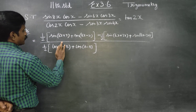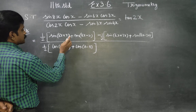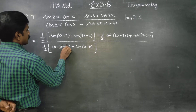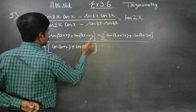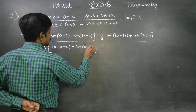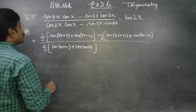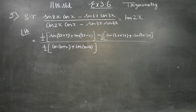Now substituting on your own: a plus b equals 2x and a minus b equals x. So 2x minus x gives us the values. Then we apply cos(a+b) plus cos(a-b), using the sin sin formula accordingly.